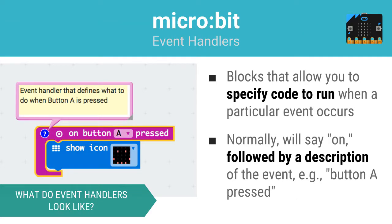Here is what event-based programming looks like when coding the MicroBit using blocks. An event handler, like this one that listens for button A to be pressed, is coded to perform a task or tasks in response to the event occurring. In this case, a smiley face will be shown on the LEDs in response to button A being pressed.